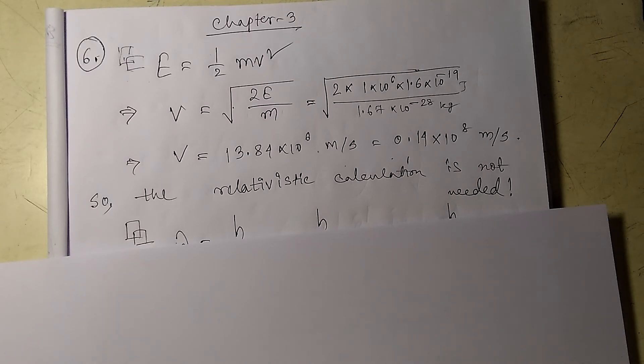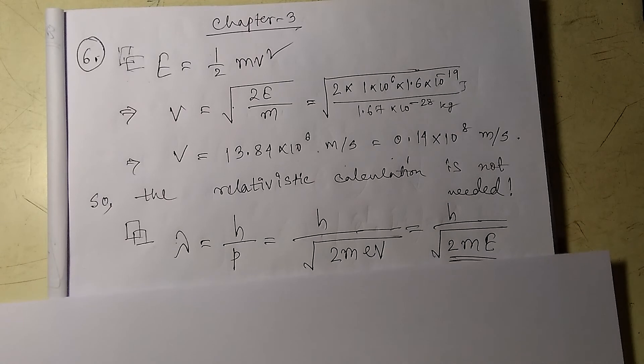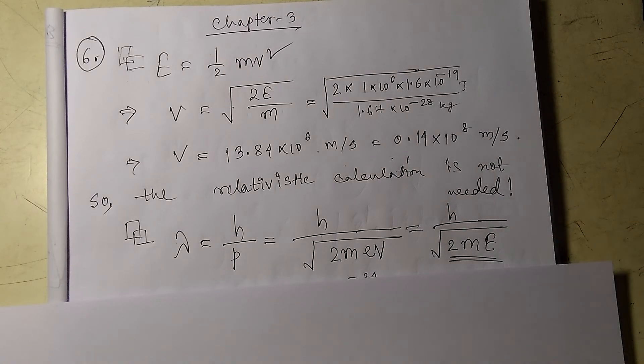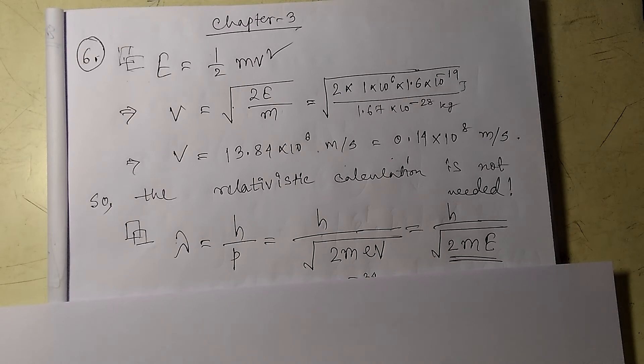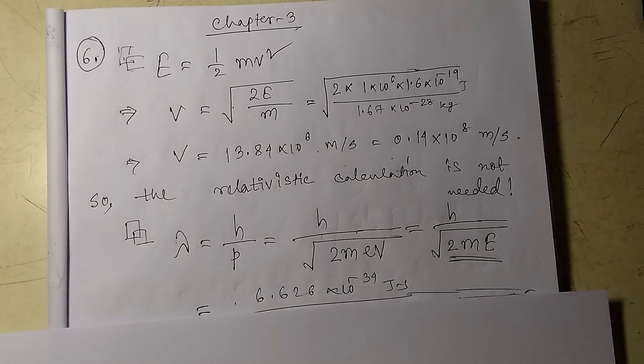We know what p is in terms of energy: E equals p squared by 2m, so p would be the square root of 2mE, which I have written in this equation. If I put the values of h, m, and e in this equation, I will get the value.